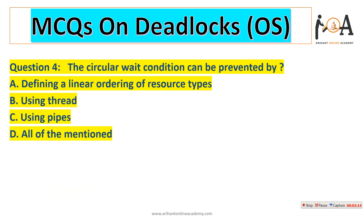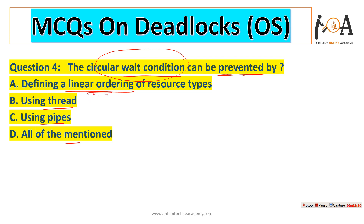The next question is: the circular wait condition can be prevented by which method? By defining a linear ordering of resource types, using threads, using pipes, or all of the above? Defining a linear order of resource types means we can prevent the circular wait condition. Option A — defining a linear ordering of resource types — is the correct answer.